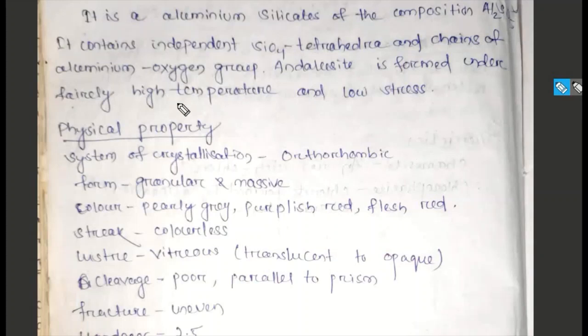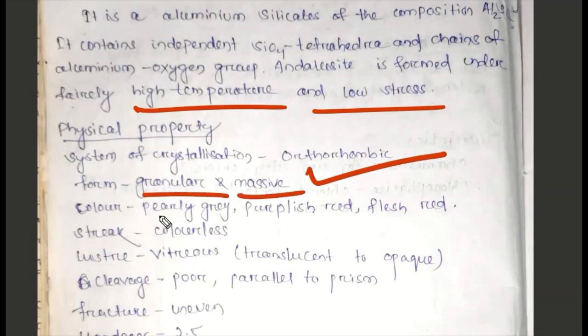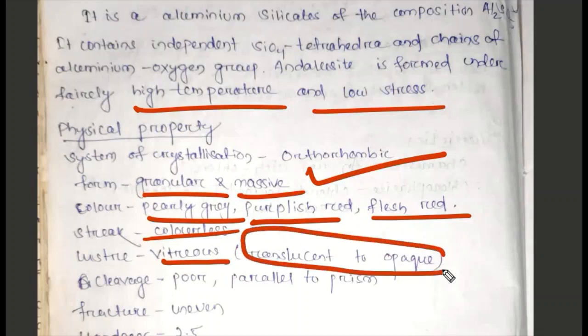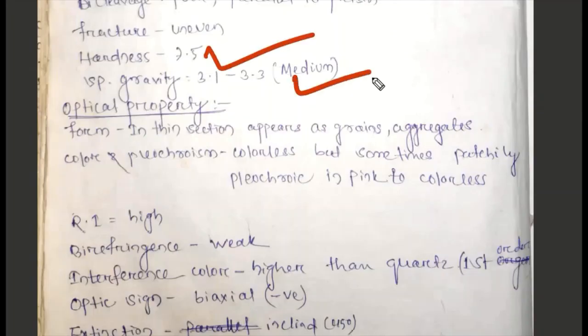Physical properties: System of crystallization is orthorhombic. Form is granular and massive. Color is pearly gray, purplish red, fleshy red. Streak is colorless. Lustre is vitreous, translucent to opaque. Cleavage is poor, parallel to prism. Fracture uneven. Hardness 7.5, specific gravity 3.1 to 3.3, medium.